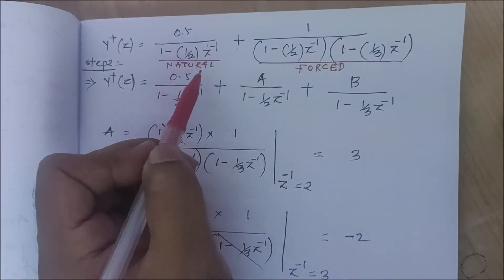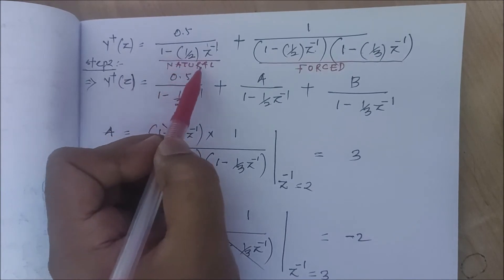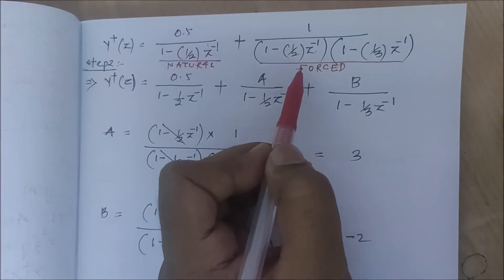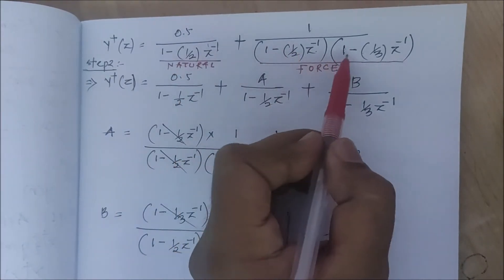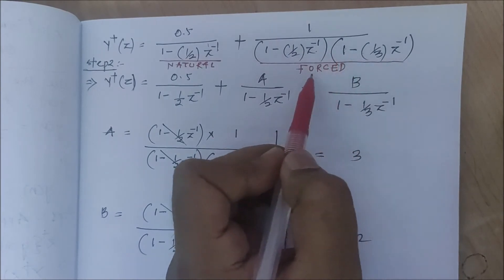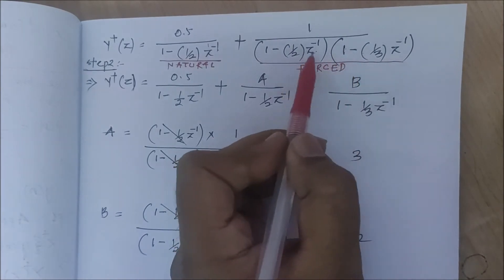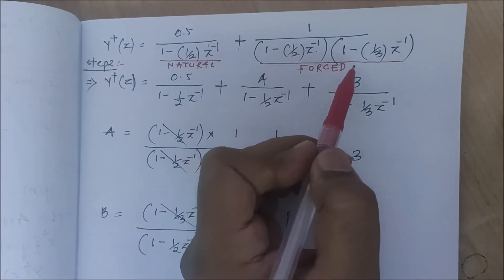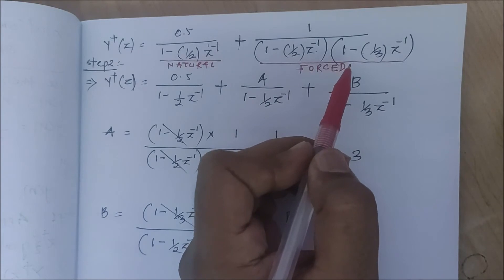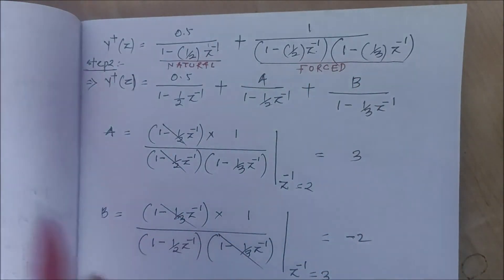The response we are getting due to the initial condition is called the natural response, and the response due to the input is called the forced response. Since we supplied input x(n) = (1/3)^n u(n), the second part — 1/[(1-(1/2)z^(-1))(1-(1/3)z^(-1))] — is the forced response.